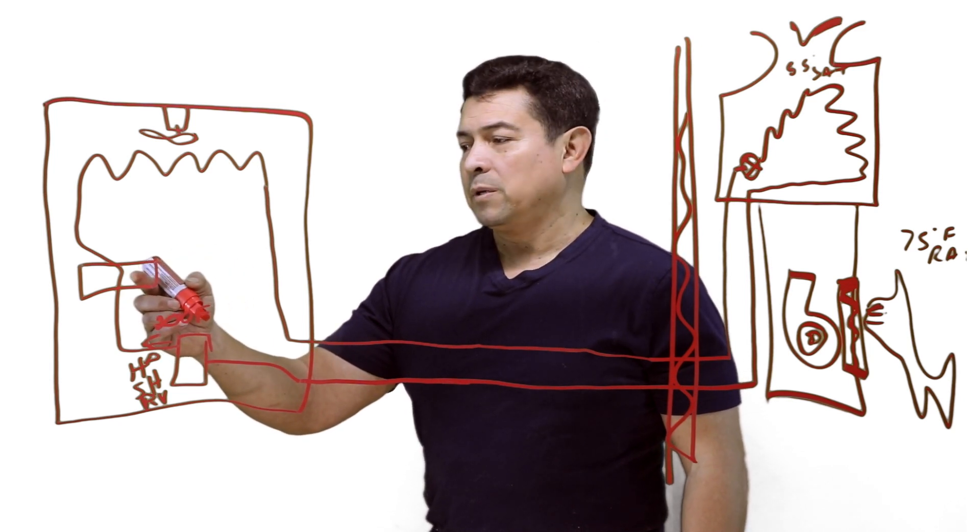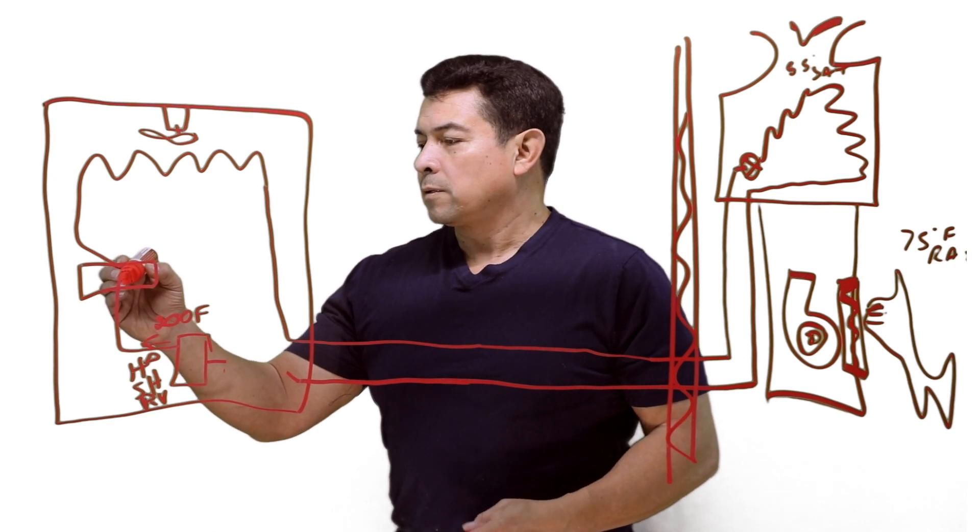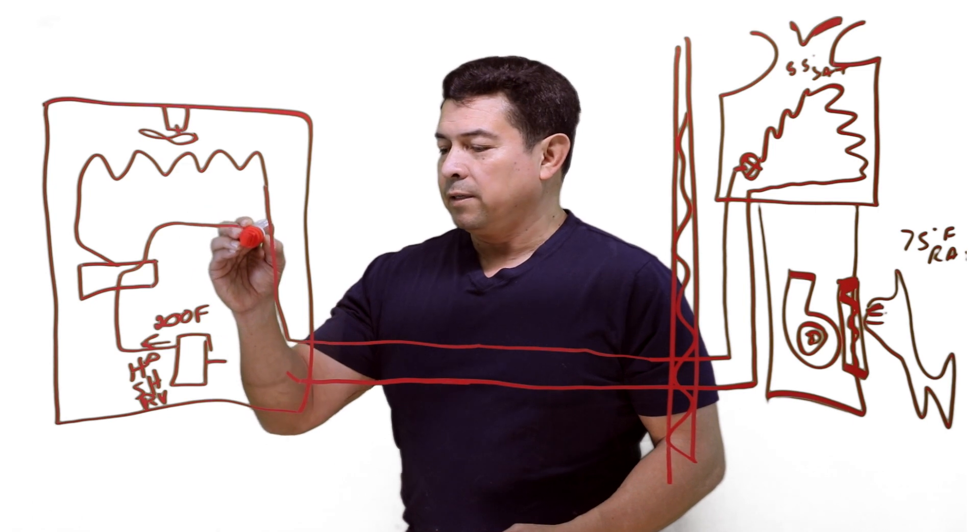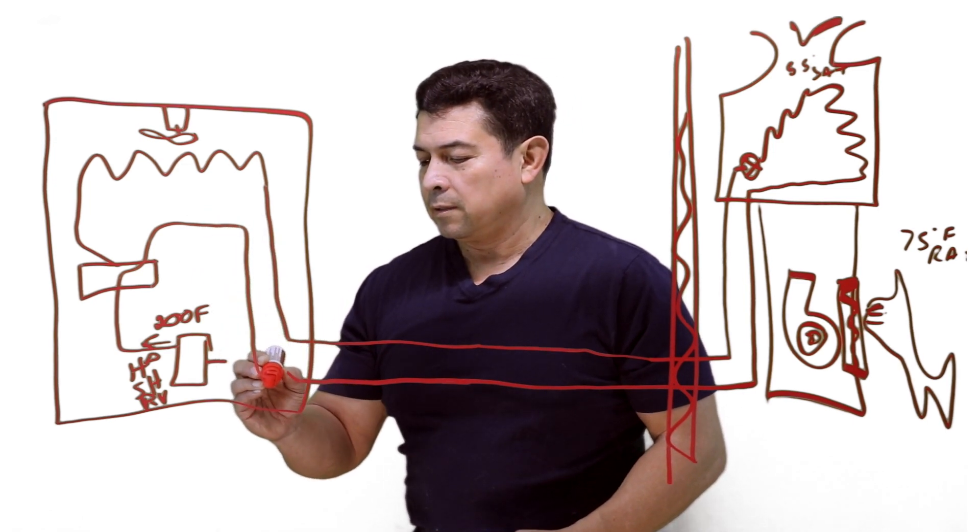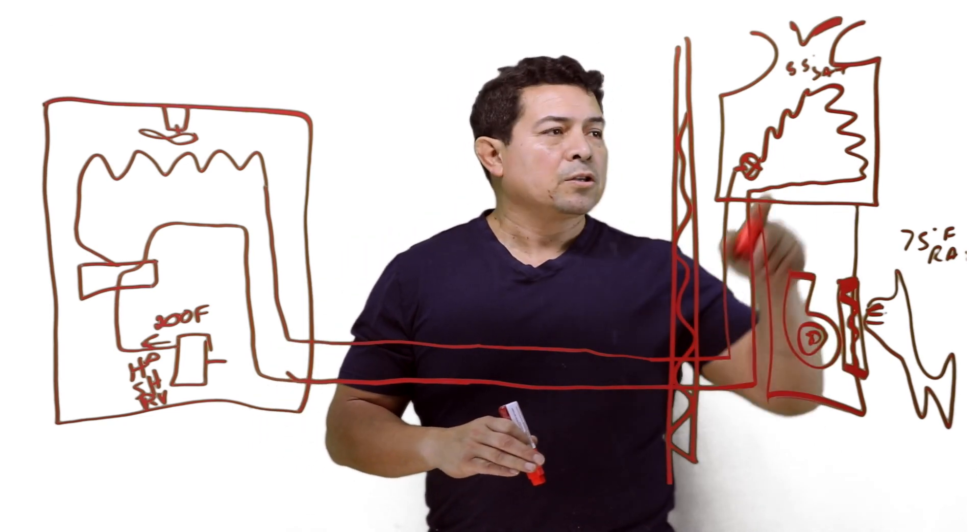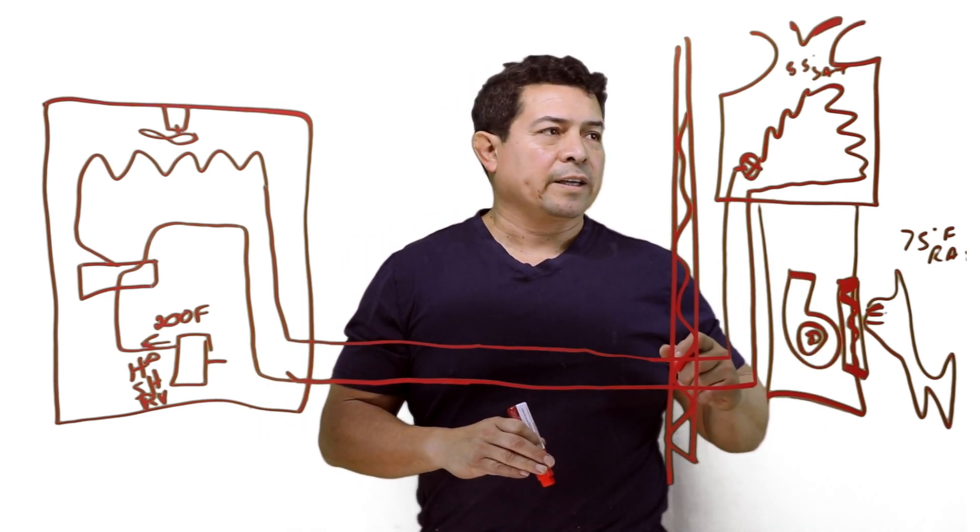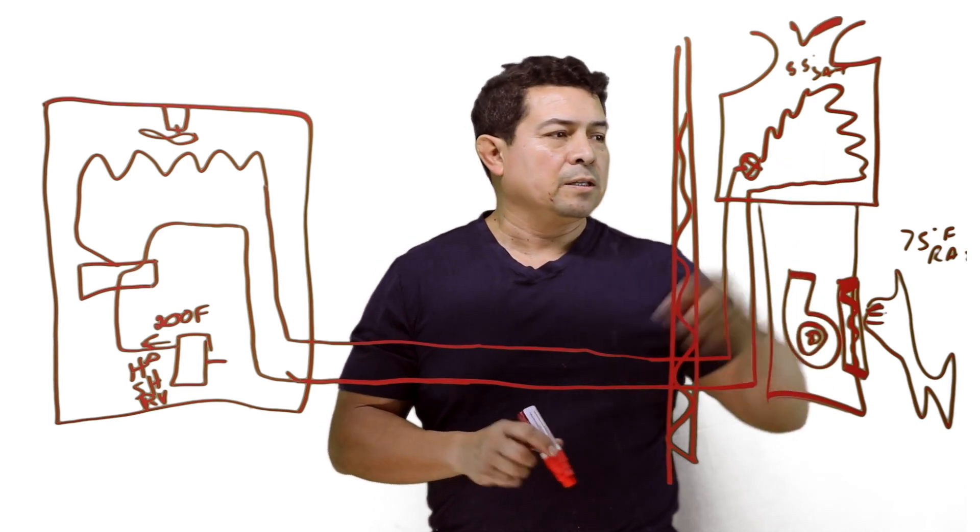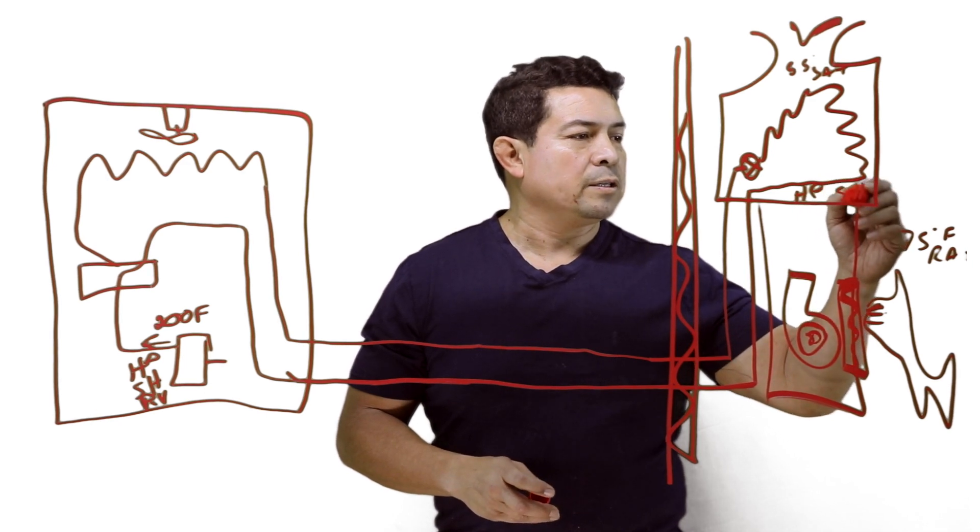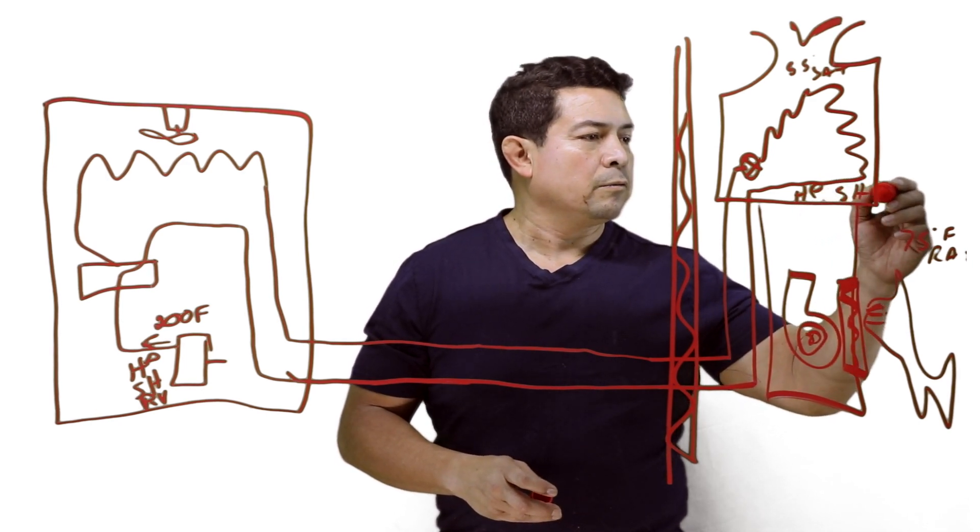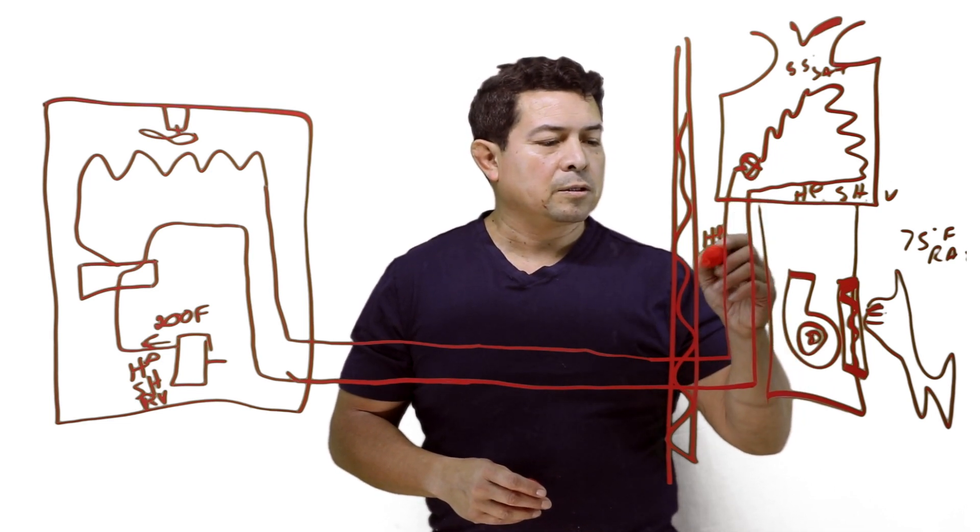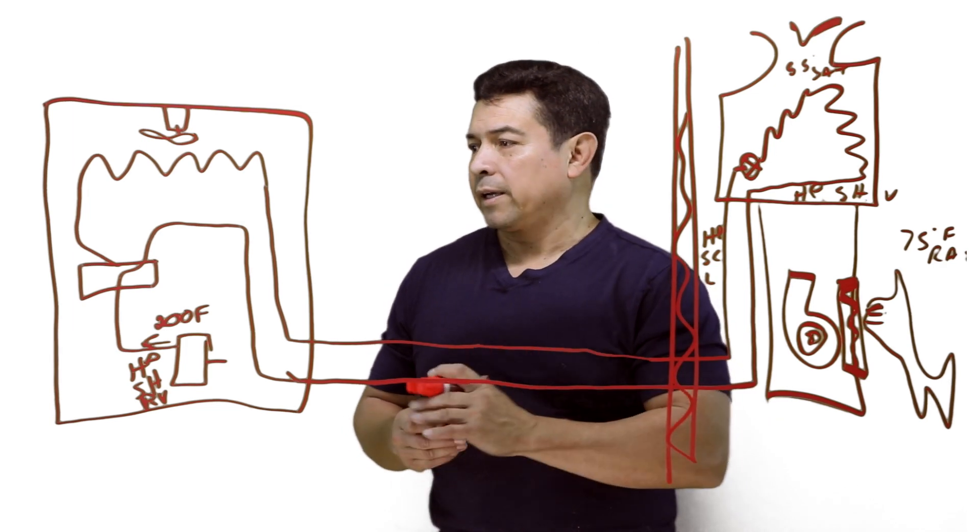It's going to reroute it from here to this other line. And this other line is going to bring it on out to the indoor coil. So now this coil is going to be acting like a condenser. It basically comes in as high-pressure, superheated vapor. And it's going to come out as high-pressure, sub-cooled liquid coming back through my liquid line.